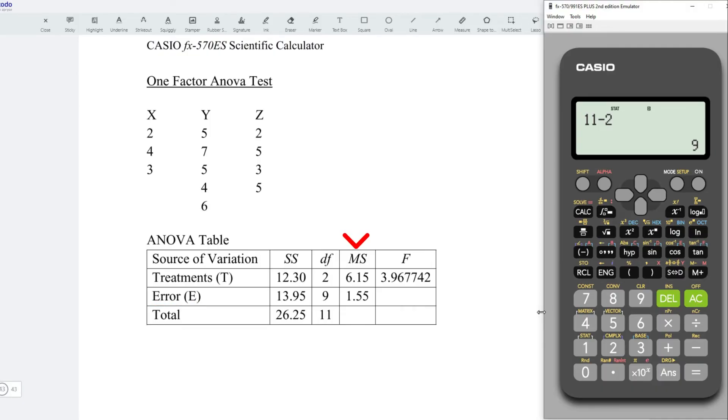To obtain the mean square error, simply take the sum of square divided by the degree of freedom. For example, we take 12.3 divided by 2 and obtain 6.15. And so for the error, 13.95 divided by 9, obtain 1.55.